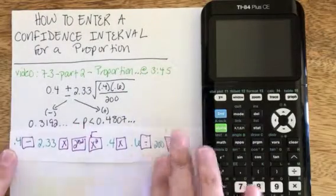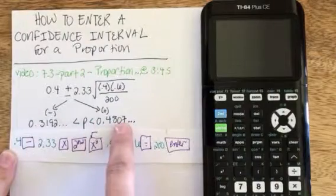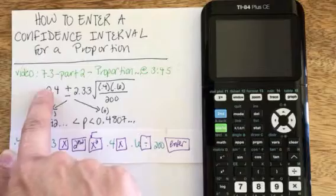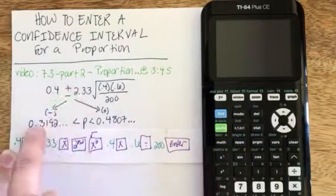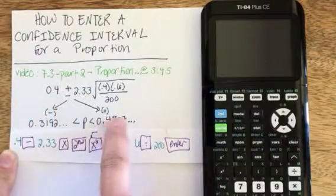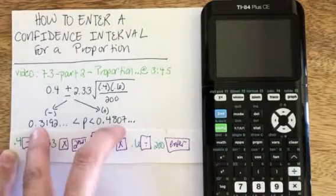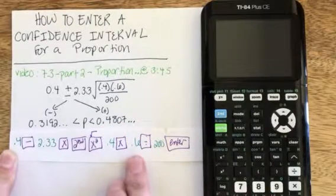Proportion confidence intervals have a lower bound and an upper bound value to predict the population proportion, where essentially you're taking the same problem once with subtraction and once with addition. Although this calculator may have built-in functionality to give you these two values, I like to show people how to do this by hand.